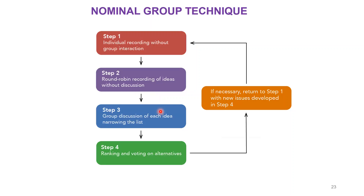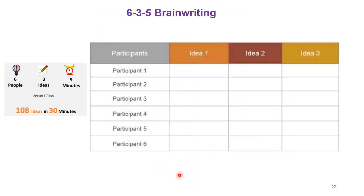Next is a similar one called the Nominal Group Technique, where you are going to individually record ideas. Here you are not going for any discussion. Then finally you go for a group discussion where you have to discuss the ideas and give explanations. Suppose six members are on the team — first you should not discuss the idea with anybody; you have to write down the ideas individually.